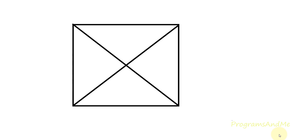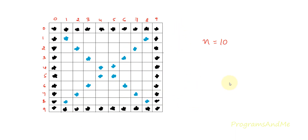Hello everyone and welcome to my YouTube channel. Today in this tutorial we will write a Python program to print a pattern — specifically a star pattern in a square shape with stars along the diagonals as well. When the number of rows and columns is 10, the pattern will look like this.